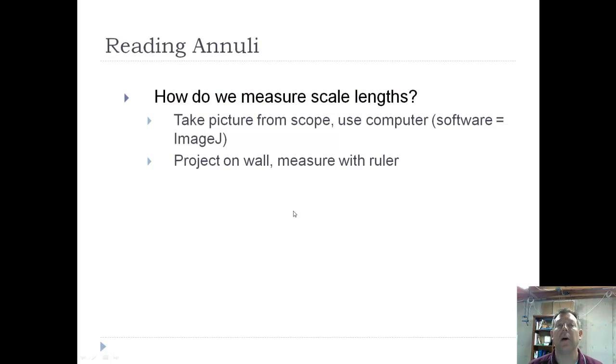And then the last thing to talk about as far as back calculating is how do we do this? How do we get these measurements? Clearly the easiest way is to take a picture from the microscope and then just do measurements on the computer. The software that we use is called ImageJ. It's freeware and it does exactly that. And it's a piece of cake. Old school is to take that camera, project it on the wall, and then measure with a ruler. Or maybe use a microfiche machine and read them and measure them with a ruler. That works, but there's no reason to do that anymore. You can just take a picture and measure it on the computer. So that's back calculating. That's a skill that you might want to use sometime in the future. And that's all I have. So thanks a lot.